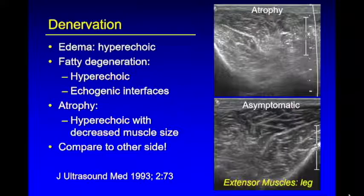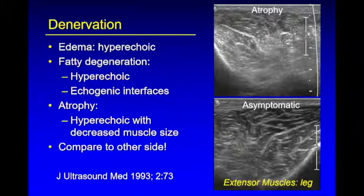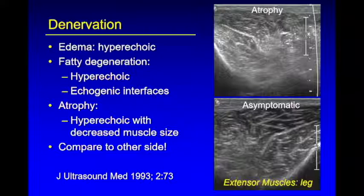We also have to keep in mind the end organ — the effect on the muscle. The earliest sign of denervation is edema, which appears as increased echogenicity because there are increased interfaces between the edema and the muscle tissue. As denervation continues, you'll have fatty degeneration or infiltration, which also appears hyperechoic — usually more hyperechoic than the edema itself. Fat is actually hypoechoic on ultrasound, but it appears echogenic because of the muscle fibers and fat interdigitating, creating more interfaces.